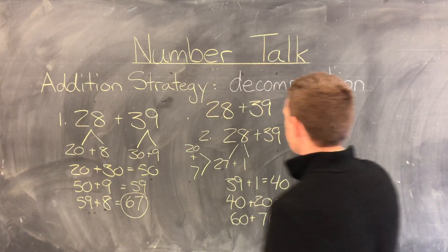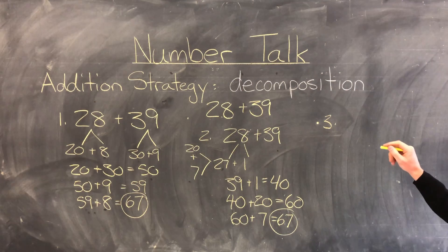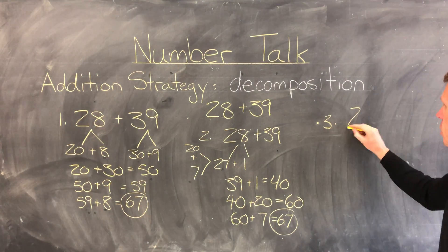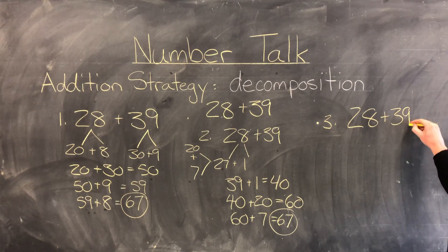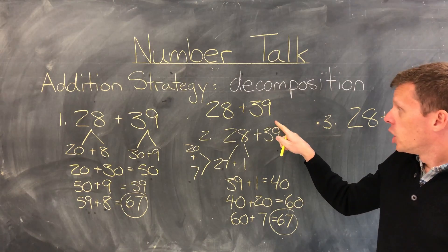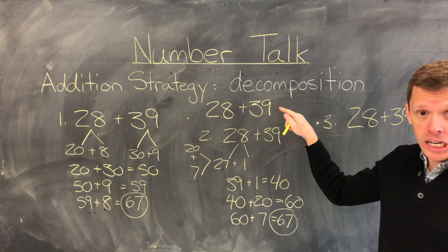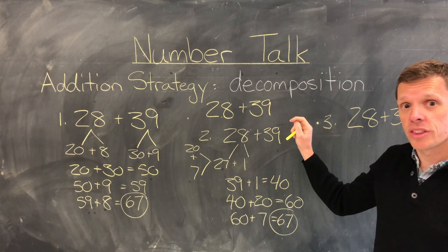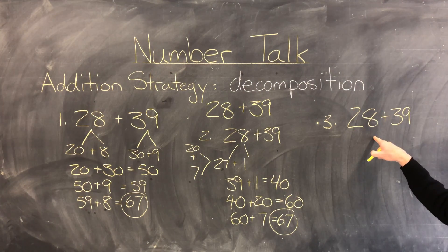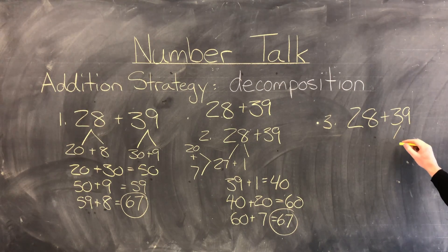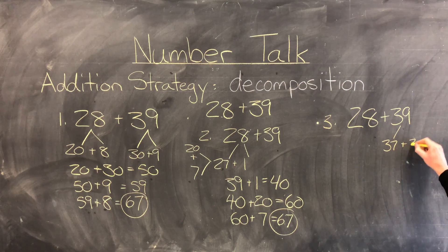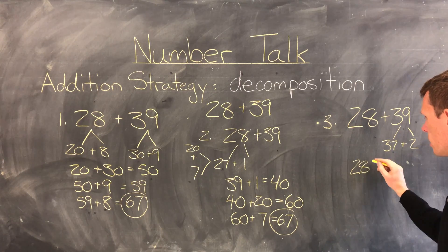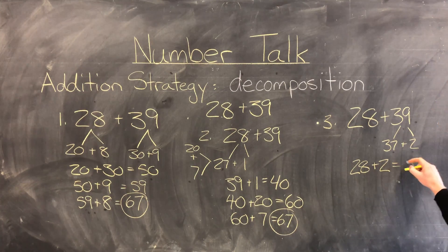In my third example, I'm going to decompose 39 instead of 28. Writing the question again: 28 plus 39. Since 28 is close to 30, I'll decompose 39 into 37 plus 2, so I can make my 28 into 30 and work with that friendly number. So keeping 28 the same and decomposing 39 into 37 plus 2 — adding 28 plus 2 gives me a sum of 30.